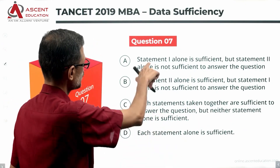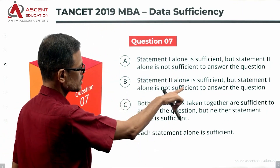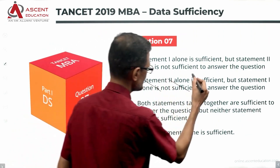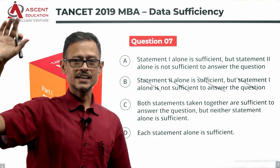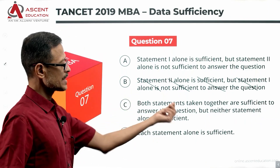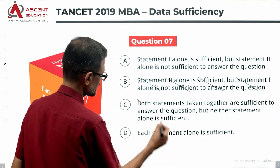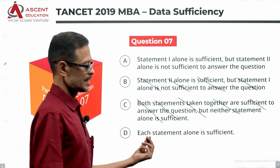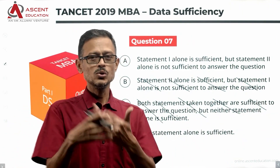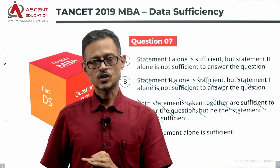Since statement one is sufficient, we eliminate answer options B and C. We are left with A or D. Answer option A means only statement one is sufficient and two is not. Answer option D means each statement alone is sufficient. So let's evaluate statement two to determine whether the answer is A or D.